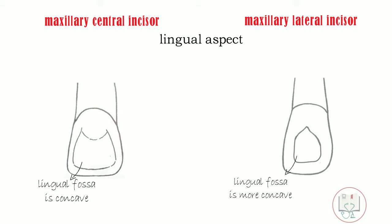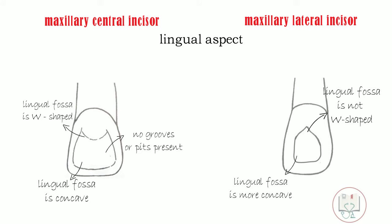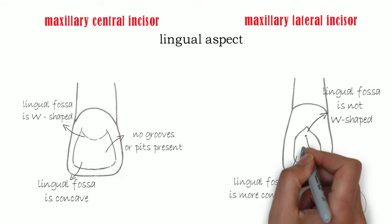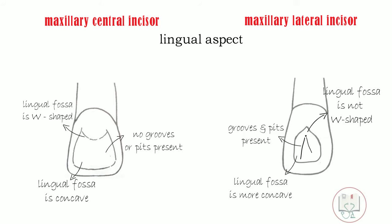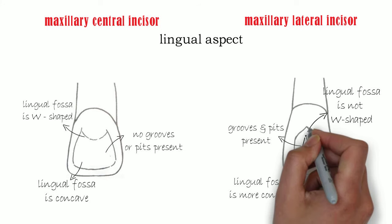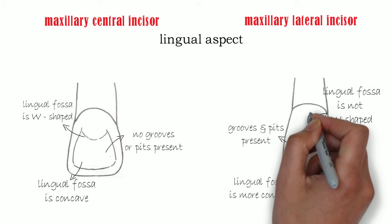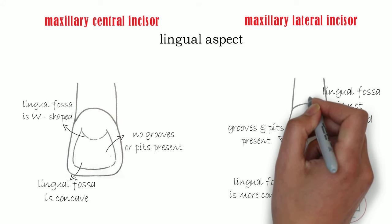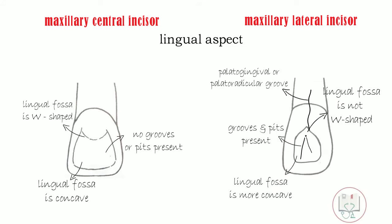The lingual fossa is shallow in the central incisor but is deep and well demarcated in the lateral incisor. Moreover, it is W-shaped in the central incisor but more V-shaped in the lateral incisor. The lingual fossa in the central incisor does not have any developmental groove or pit, whereas they are very common in the lateral incisor. Additionally, a groove is often seen running from the distal side of the cingulum, crossing the cervical line and running onto the root, called the palatal radicular groove or palatal gingival groove.